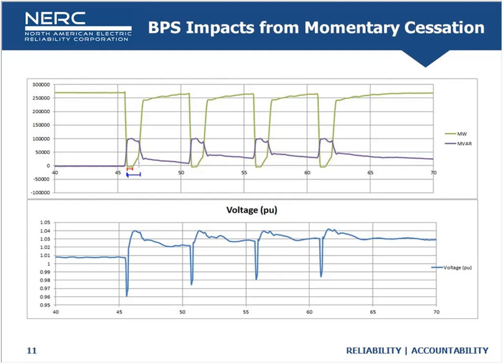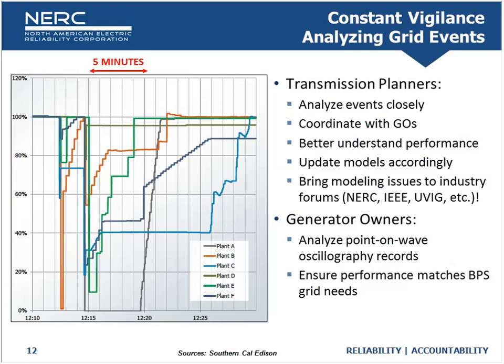These are things we're looking at and figuring out how to provide guidance on. The number one thing we're doing is maintaining constant vigilance, looking at grid events with a fine-toothed comb. The recommendations we're making are that if you're a planner, a planning coordinator, or a transmission planner, be analyzing grid events — because some of the most interesting things we've found over the last six to seven months have come from planners looking at normally cleared two-and-a-half cycle, 500 kV faults.